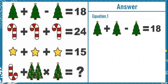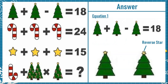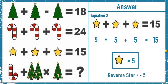Now moving on to equation 1: we have a tree with a star, and tree with star plus tree with star minus tree with star is equal to 18. From equation 3, a star is equal to 5. If you see the star on the third tree in the equation, it's the reverse of the star on top of the first and second trees. So a star equals 5 and a reverse star equals minus 5.